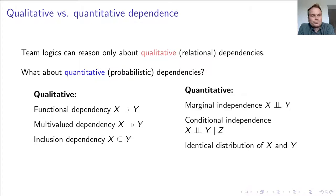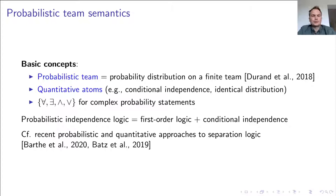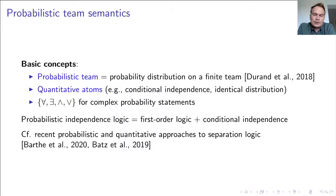However, in many areas central notions of dependence and independence make genuine use of quantities. For instance, in order to determine whether a conditional independence between random variables holds, one has to calculate actual probabilities of those random variables. To address also quantitative notions of dependence, we have recently introduced the concept of a probabilistic team, accommodating various quantitative atoms together with connectives and quantifiers for complex probability statements.